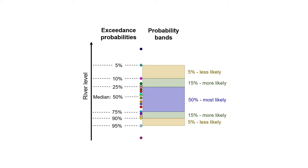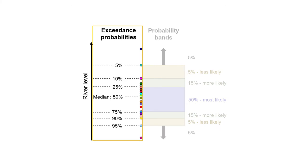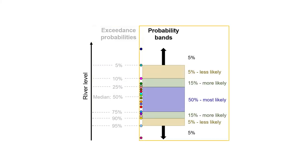The width of these bands, as reflected in these percentages, indicates the likelihood of each range of river levels. Finally, the lowest and highest ensemble members each represent a 5% chance of a river level outside the range of the probability bands. Exceedance probabilities and probability bands are simply two different ways of describing the ensemble.